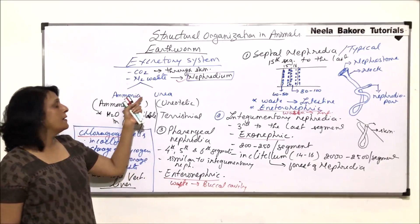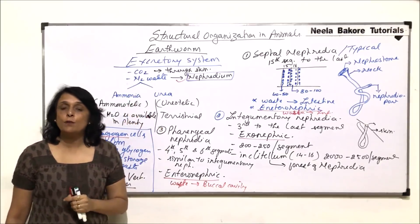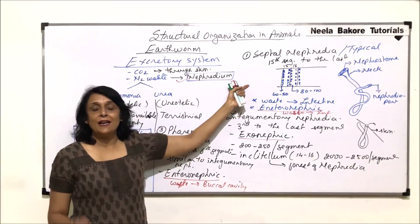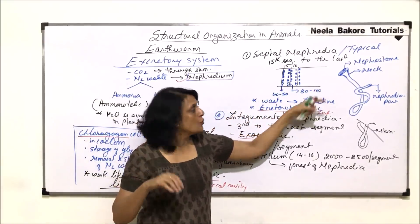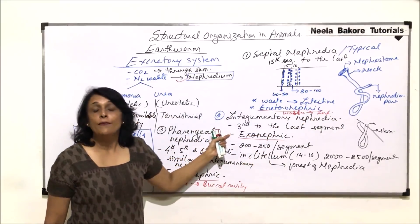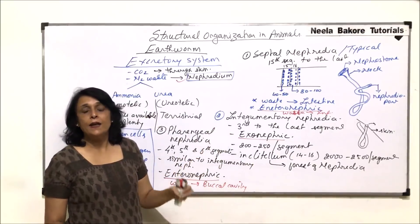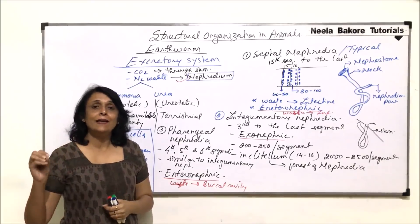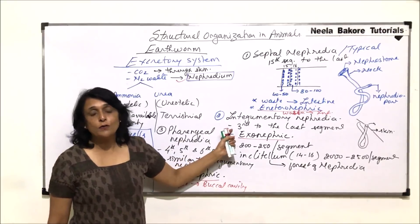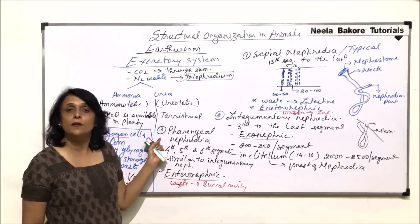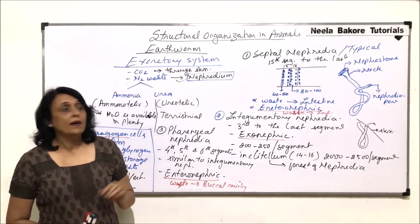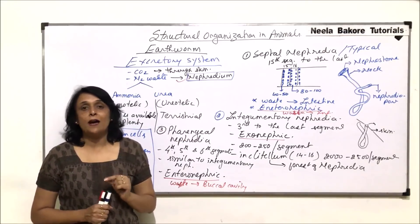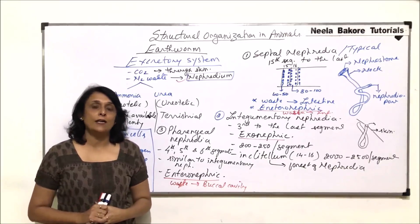To recap: if plenty of water is available, the waste would be ammonia (ammonotelic); if water is scarce, they become ureotelic. Septal nephridia are the typical ones with a nephrostome, neck, and nephridial pore, while the other two lack nephrostome and collect waste from the coelomic fluid. The main structure responsible for elimination is the nephridium. In the next part we will take up another system of earthworm.